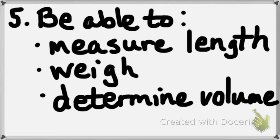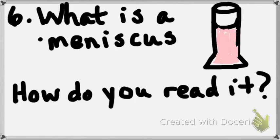Number six: know what a meniscus is and the proper way to view it. What piece of equipment has a meniscus? A graduated cylinder. The meniscus forms because water is adhesive to the glass and sticks to the sides. You must measure the bottom of the meniscus. Keep the graduated cylinder on the table and get eye level to the meniscus — that means you have to bend down.